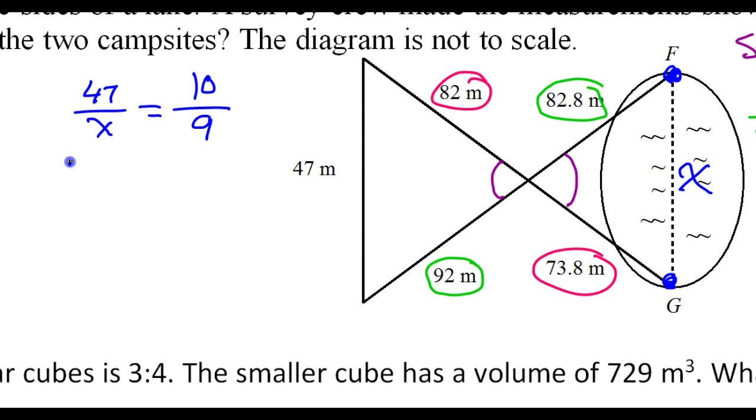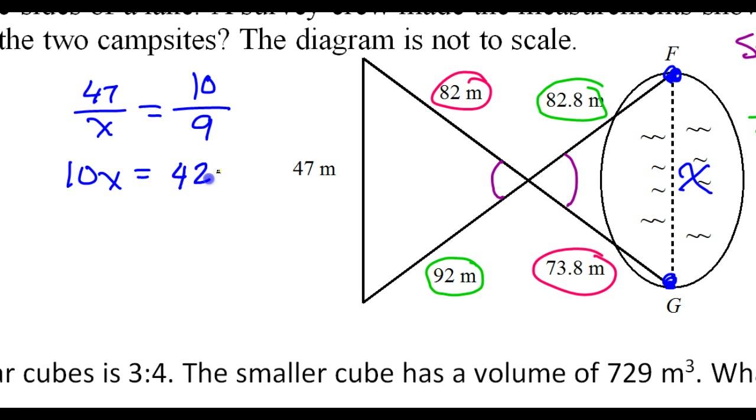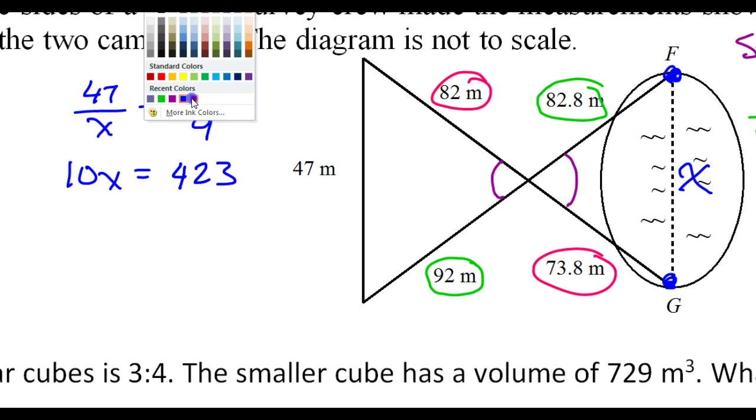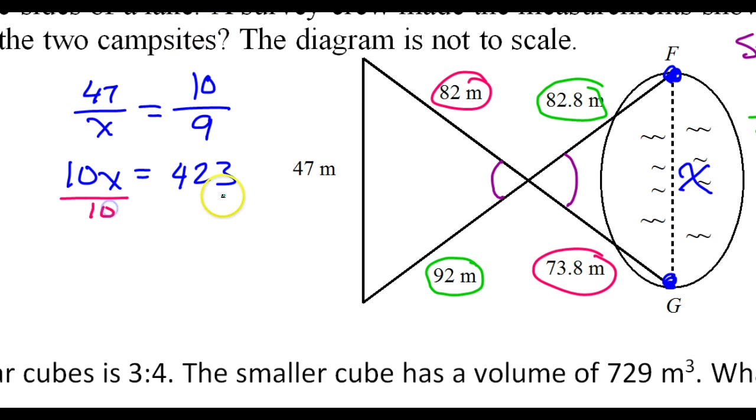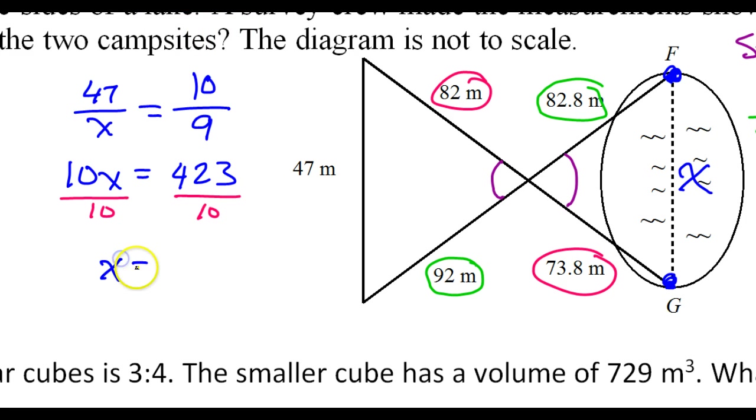When you cross multiply, you're going to get 10x is equal to 47 times 9. So we're going to divide by 9, 423. And then dividing by 10. When you divide by 10, you know you just move the decimal point 1 over. So that'll be 42.3.